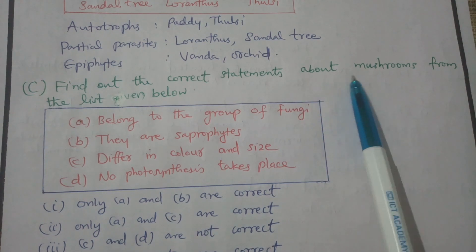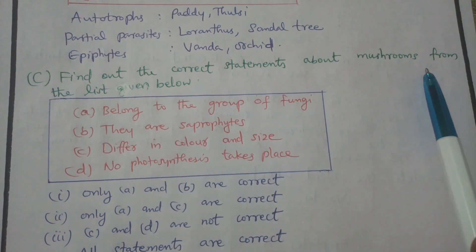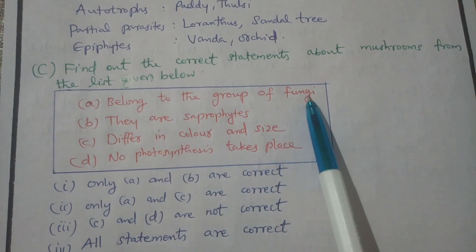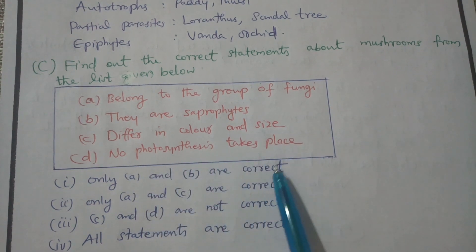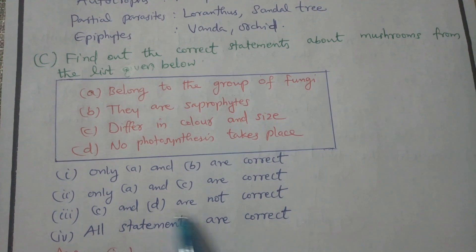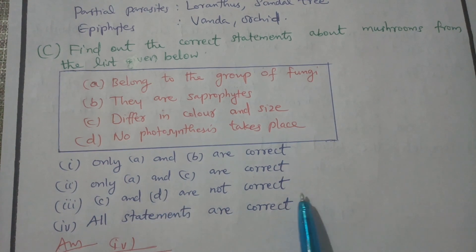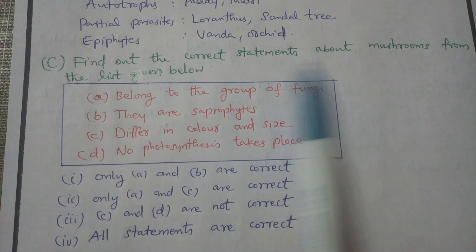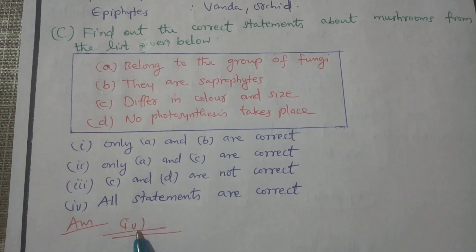Find out the correct statement about mushrooms from the list given below. The options include: they belong to the group of fungi; they are saprophytes; they come in different colors and sizes; no photosynthesis takes place. All statements are correct — option 4 is the correct answer.